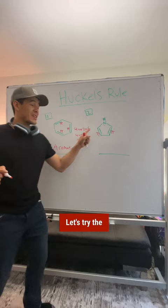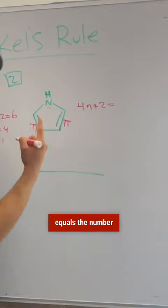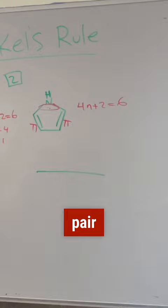Let's try the same principle over here. 4n + 2 equals the number of pi electrons. In this case again, I'm going to count this lone pair because it's part of the conjugated system. So we get n = 1.